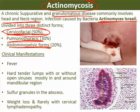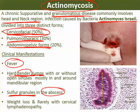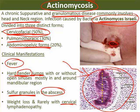Actinomycosis produces granulomatous inflammation. Clinical manifestations include fever, hard tender lumps (painful on touch), and sometimes sinus openings. A characteristic finding is black color spots called sulfur granules visible in the abscess. The patient may also have lymph node swelling around the neck. This is the characteristic feature of actinomycosis.